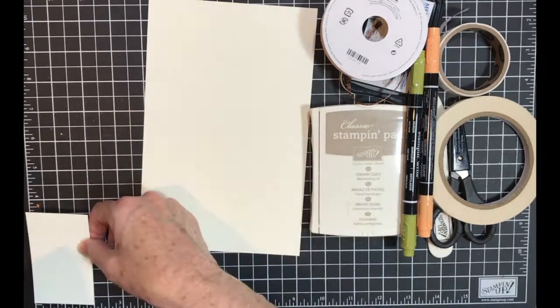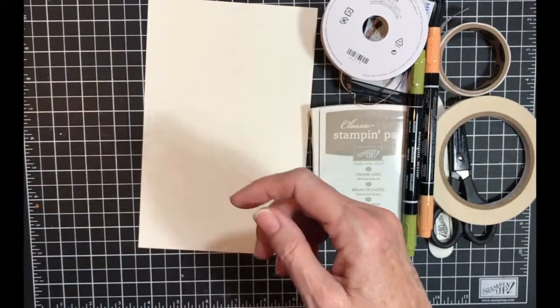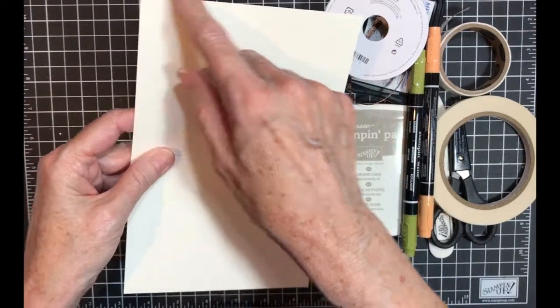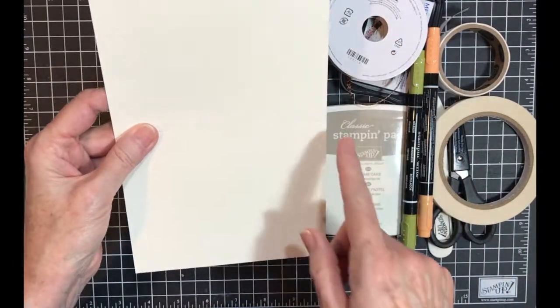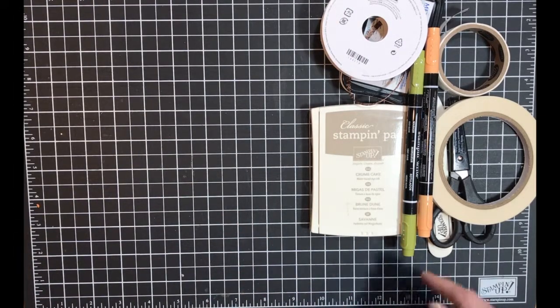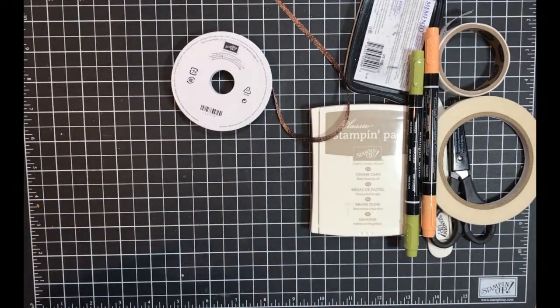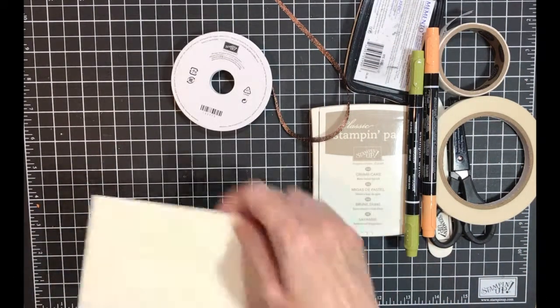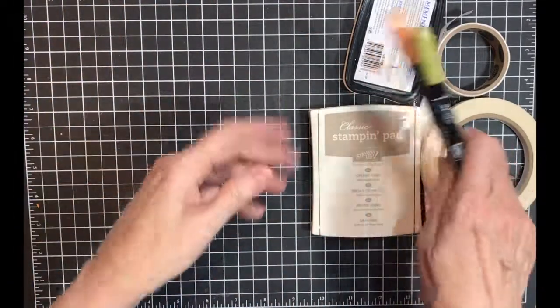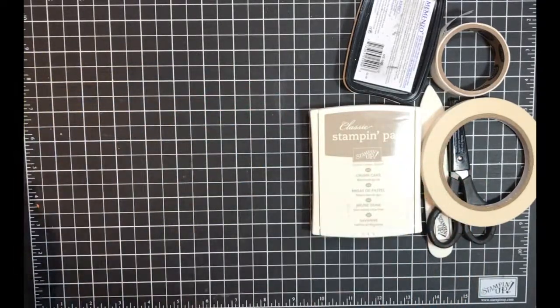I have a piece of Very Vanilla cardstock and it is two by three and a half. I have my card base which is five and a half by eight and a half, scored at four and a fourth. I will be using some of our copper foil trim. Got my envelope. I have an Old Olive marker and a Peekaboo Peach marker.